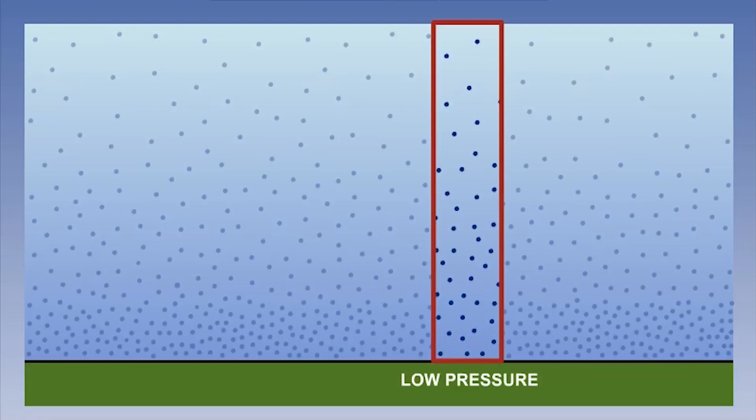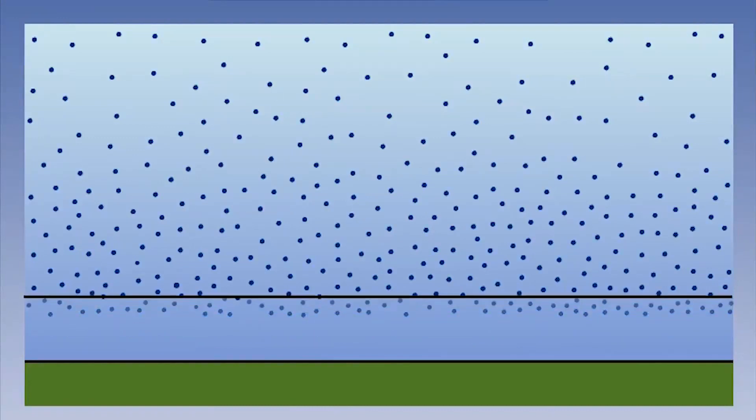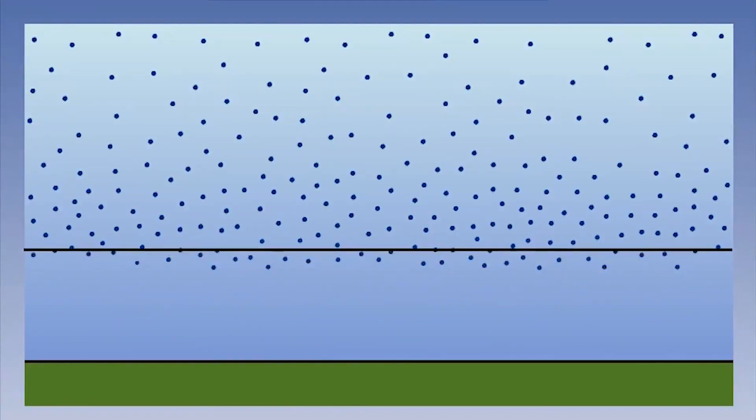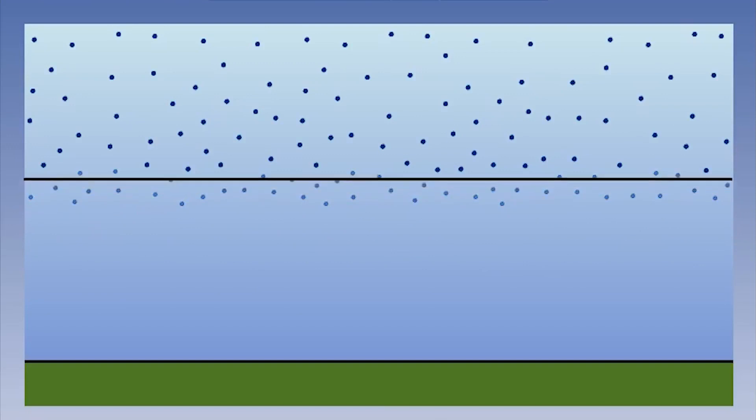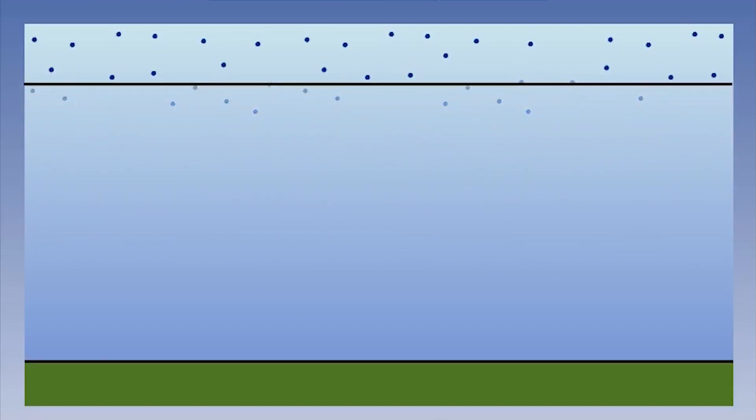The higher and higher we go in the atmosphere, the total amount of air overlying us decreases. Therefore, the less the weight of air above, the less the atmospheric pressure.